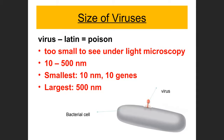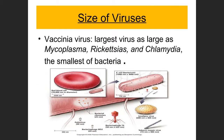Viruses are too small to see under a light microscope; you may be able to see them under an electron microscope. They measure between 10 and 500 nanometers. The smallest are around 10 nanometers, the largest around 500 nanometers (0.5 micrometers). The place where bacteria and viruses meet is where the largest viruses are as large as the smallest bacteria.